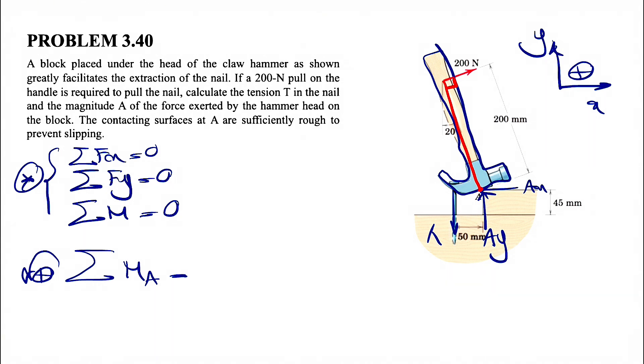But one thing that we need to consider is that this 200 force is actually perpendicular to this line. So for finding the moment, we already have the perpendicular distance. There is no need to resolve this force into X and Y component because we already have the vertical distance from A to the line of action of the force.